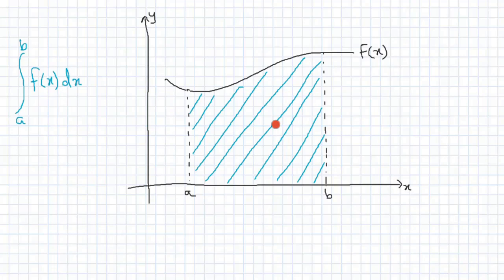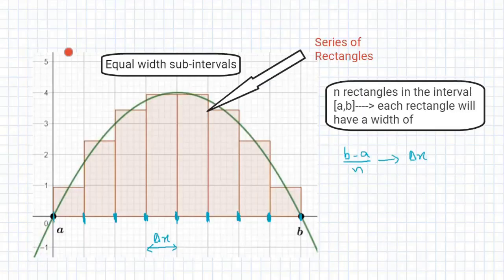There are many methods by which the area can be approximated, but in this video I'll only be talking about Riemann sum. In Riemann sum, we use a series of rectangles which are of equal width, and then we find the area of each rectangle and sum them up, which gives me the approximate area.